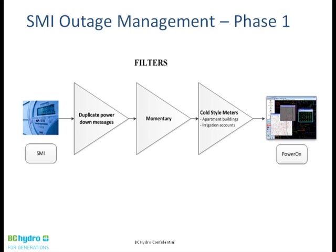We also have a large portion of our population where there's a switch the user can disconnect — but that's ahead of the meter. This applies to irrigation accounts, seasonal watering, and large apartment multi-dwelling units where property managers or electricians can disconnect that switch during service work. We also implemented a large-scale volume reducer so that in the case of storms, we can control or eliminate the flood of messages going into our OMS.